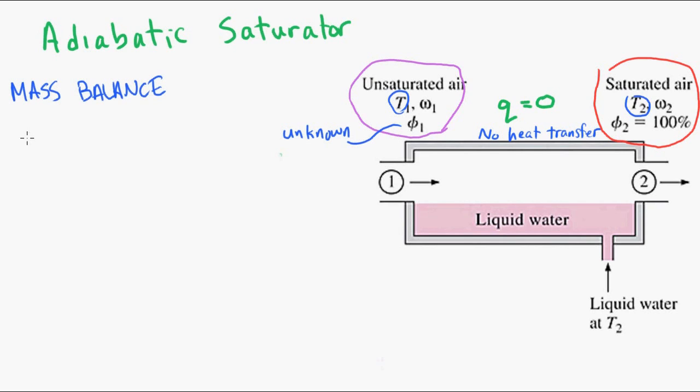So the mass going into this control volume are the mass of the air, mass of the water vapor, plus the mass of the liquid. Coming out is the mass flow of air, plus the mass flow of water vapor. So if we simplify this, the mass of the liquid is equal to the air mass flow rate, multiplied by the difference in specific humidity.